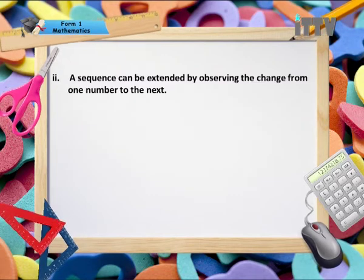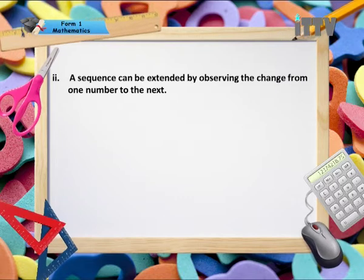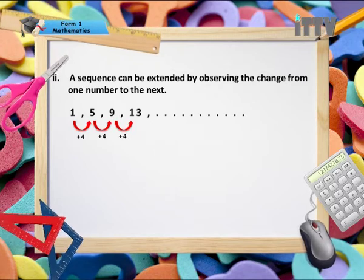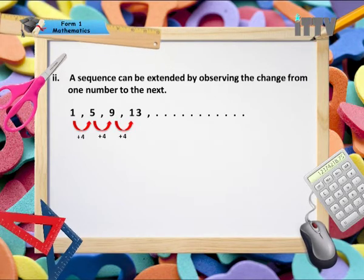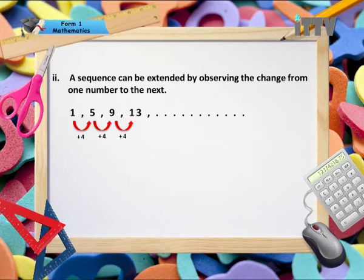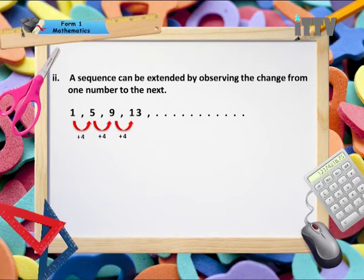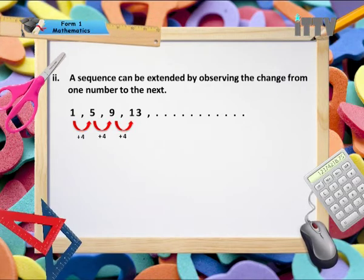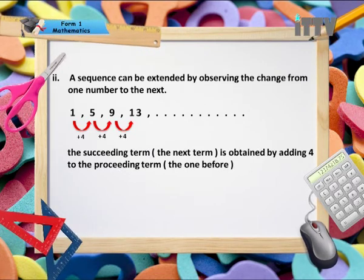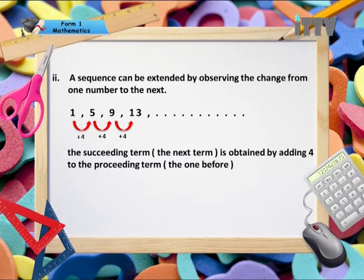A sequence can be extended by observing the change from one number to the next. For example, in the sequence 1, 5, 9, and 13, the change from one number to the next is an addition of 4, giving us 1, 5, 9, 13. The succeeding term — which means the next term — is obtained by adding 4 to the preceding term, which is the one before.